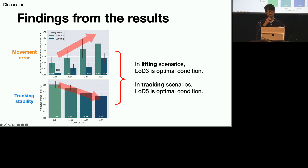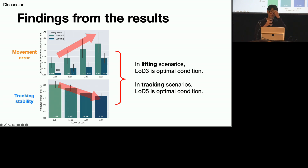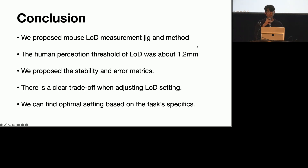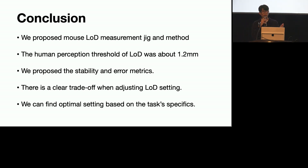We can choose the optimal LOD setting according to the type of scenario. In lifting scenarios, LOD 3 is the optimal condition; in tracking scenarios, LOD 5 is optimal. The ideal LOD level may vary based on task specifics, so given the balance between unintended movement errors and tracking stability, we can choose optimal settings. In conclusion, we have five main takeaways: we propose stability and error metrics in lifting actions and frame LOD as a trade-off; the human perception threshold of LOD was about 1.2 mm; we proposed a mouse LOD measurement method; and we can find optimal settings based on task specifics.